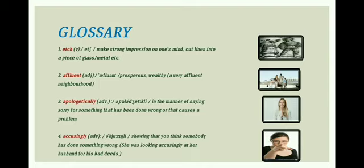Affluent da matlab hai ameer — as you can see in the second picture, a rich family going to travel in an aeroplane. Third word is 'apologetically' — it means in the manner of saying sorry for something that has been done wrong or that causes a problem. Tasweer vich vekho, apologetically da matlab hai jodho asi maafi mangde hoi apne wallon apne vichar dinde haan. Number four: 'accusingly' — it means showing that you think somebody has done something wrong, blaming the other person with your gestures. Accusingly da matlab hai kise utte dosh launde hoi.